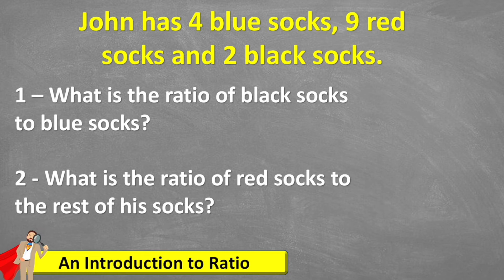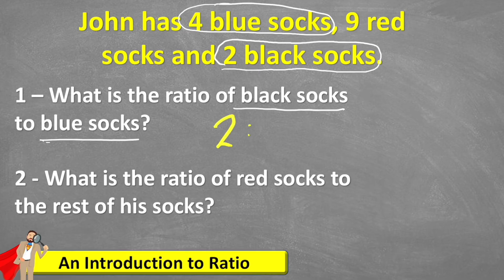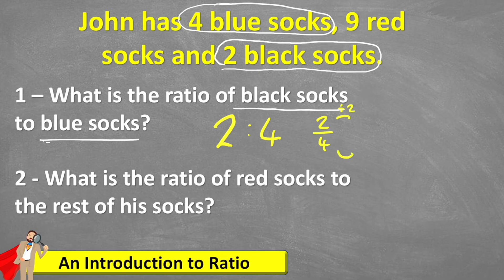Let's have a look at a word problem. John has 4 blue socks, 9 red socks, and 2 black socks. The first question asks: what is the ratio of black socks to blue socks? I've got to be very careful and follow what the question says — it said black socks to blue socks. So I have 2 black socks to every 4 blue socks, giving a ratio of 2 to 4. If we make this into a fraction, we can simplify by dividing both by 2, so my ratio is actually 1 to 2.